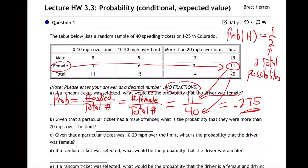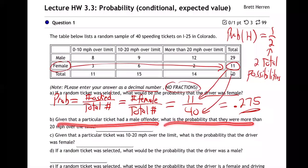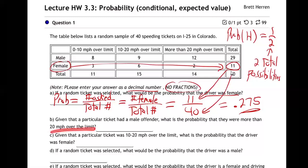Given that a particular ticket had a male offender, what is the probability that they were more than 20 miles over the speed limit? This is a given question — we have to do something a little different on these kinds.